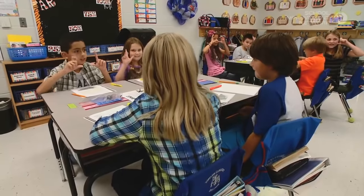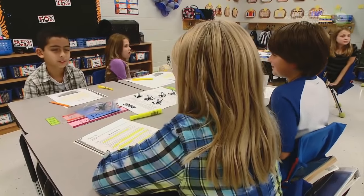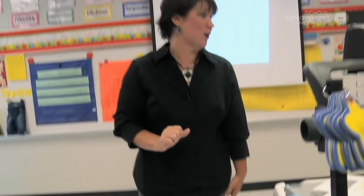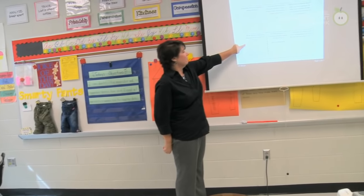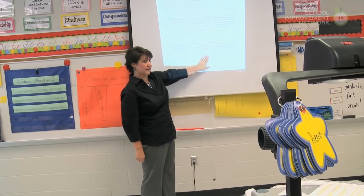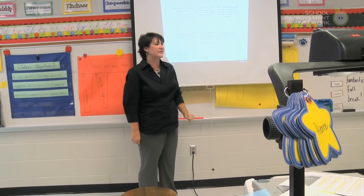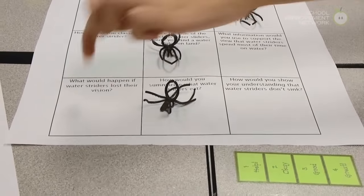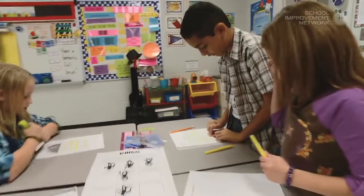Let's give both Emily and Josh our cheer. If you highlighted that, even if your group didn't make it, you can put a spider there. Next row — bottom row. What would happen if water striders lost their vision? You should already have this one answered. And how would you show your understanding that water striders don't sink? Go. On paragraph five: water striders also have very good vision and can move quickly.